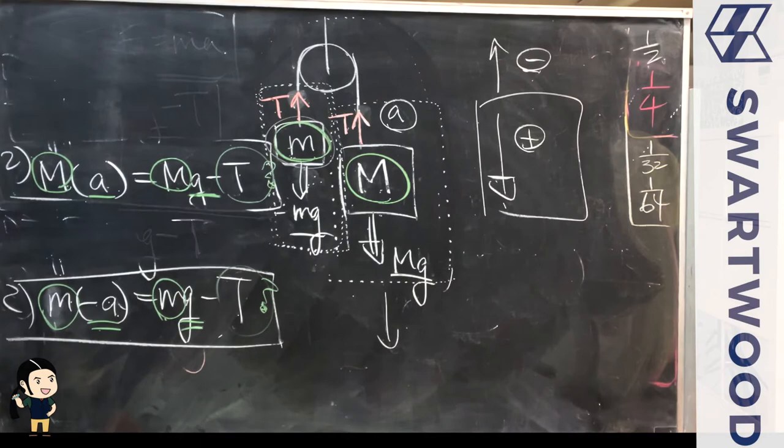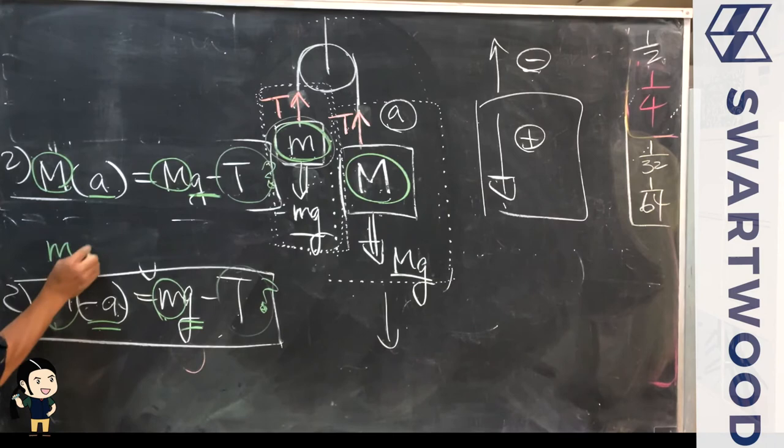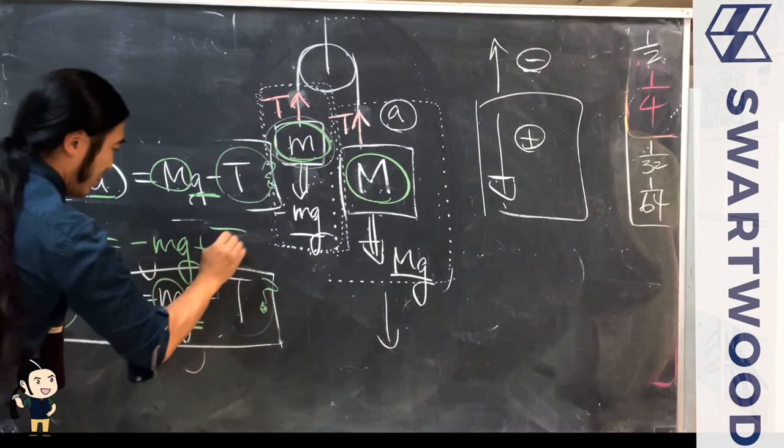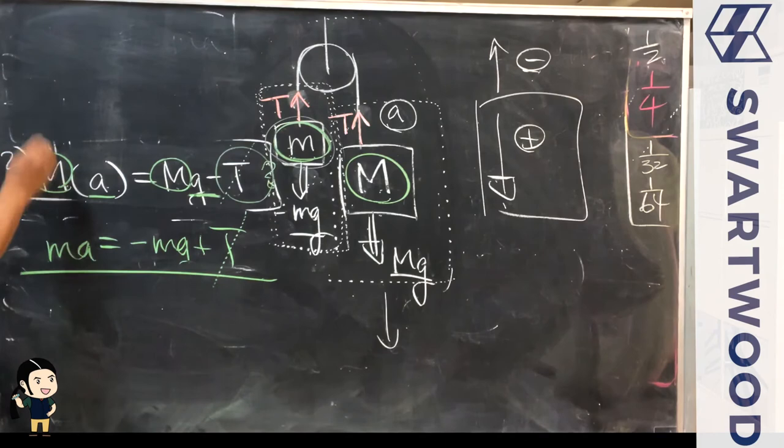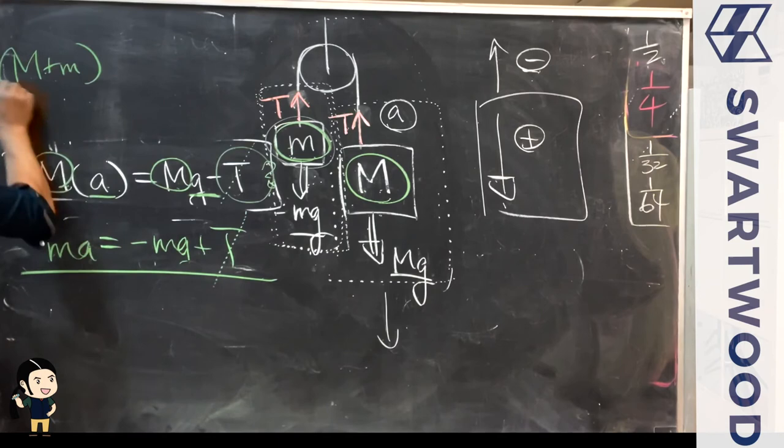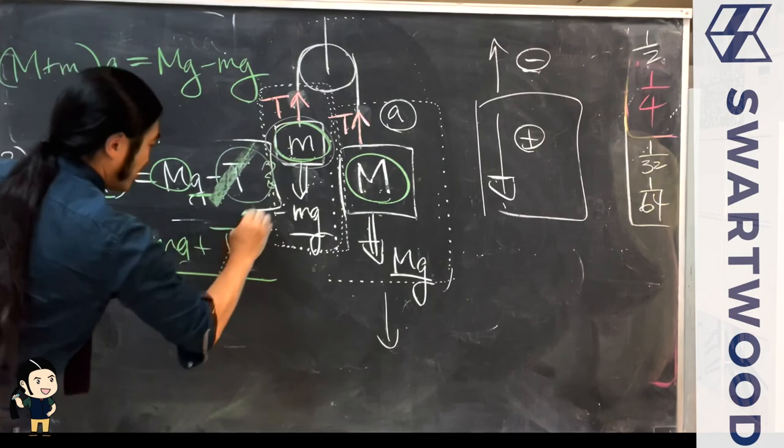What do we have? In this case, what I think we're going to do is multiply the bottom equation by negative one. So m times negative a times negative one is going to be ma, and that's going to be equal to negative mg, we're going to multiply everything by negative one, plus T. I'm just going to add these two equations together because now the T's will kill each other, and then we get big M times a plus little m times a, so (big M + little m)a is equal to big Mg minus little mg on this side. This is definitely solvable because we have little m that's given to us. We're just going to solve for a, so a is equal to (big M - little m)g / (big M + little m).